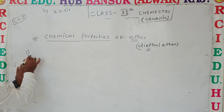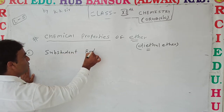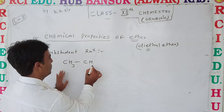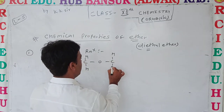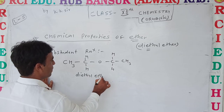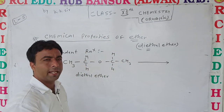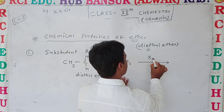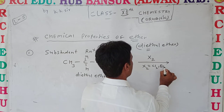The first type of reaction is substitution reactions. In substitution reactions, diethyl ether (CH3-CH2-O-CH2-CH3) reacts with alkyl halides or halogens. Halogens X2 may be Cl2, Br2, or I2.